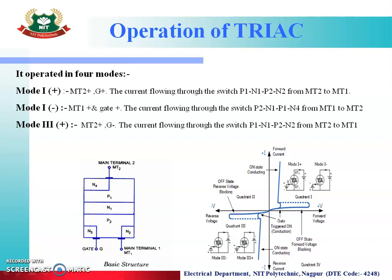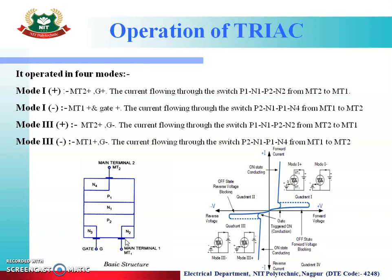The third one is mode 3 positive. In this mode, the current flows with MT2 positive through the path P1, N1, P2, N2 from MT2 to MT1. And mode 3 negative is where MT1 is positive and gate is negative. If MT1 is positive, current flows from MT1 to MT2 in the upward direction through the path N1, P1, N4.